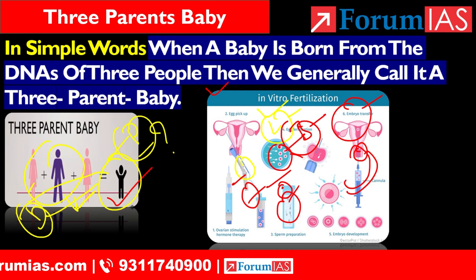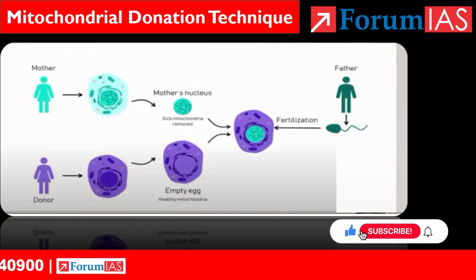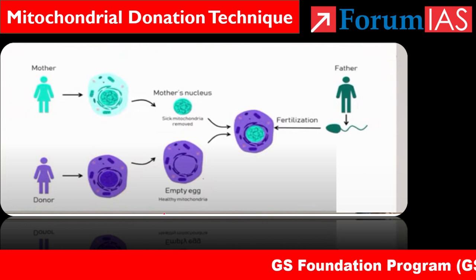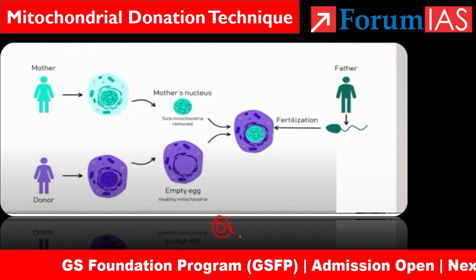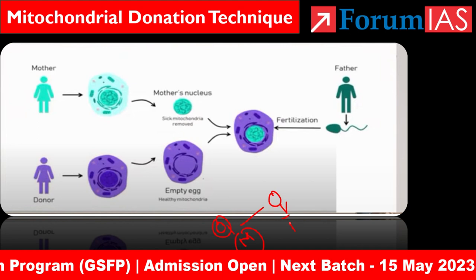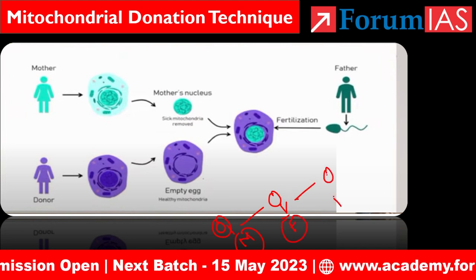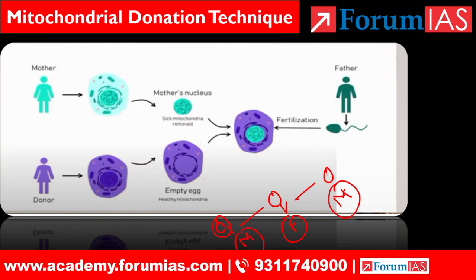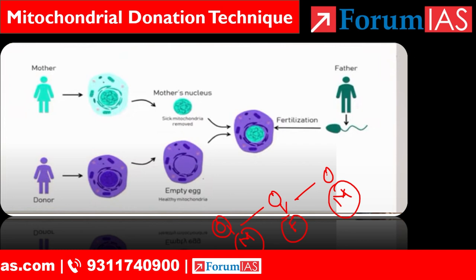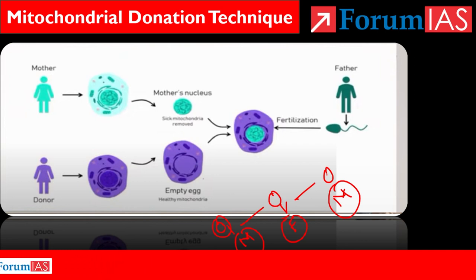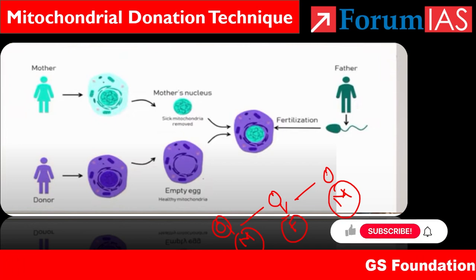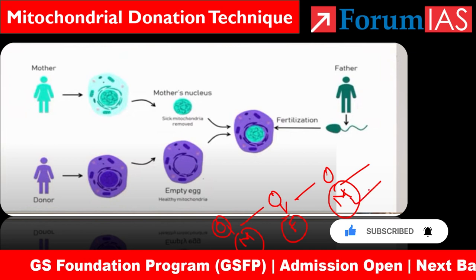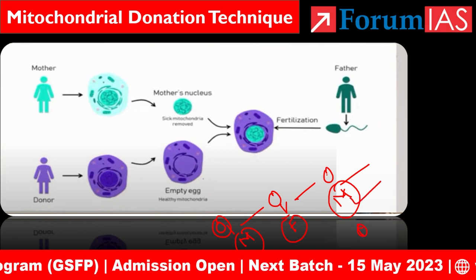This is the mitochondrial gene therapy and mitochondrial donation technique. In 3-parents baby, there are three parents: first is the own mother, second is the father, and third is a donor mother. The mitochondrial donation technique uses a third person — a donor mother — who provides healthy mitochondria.